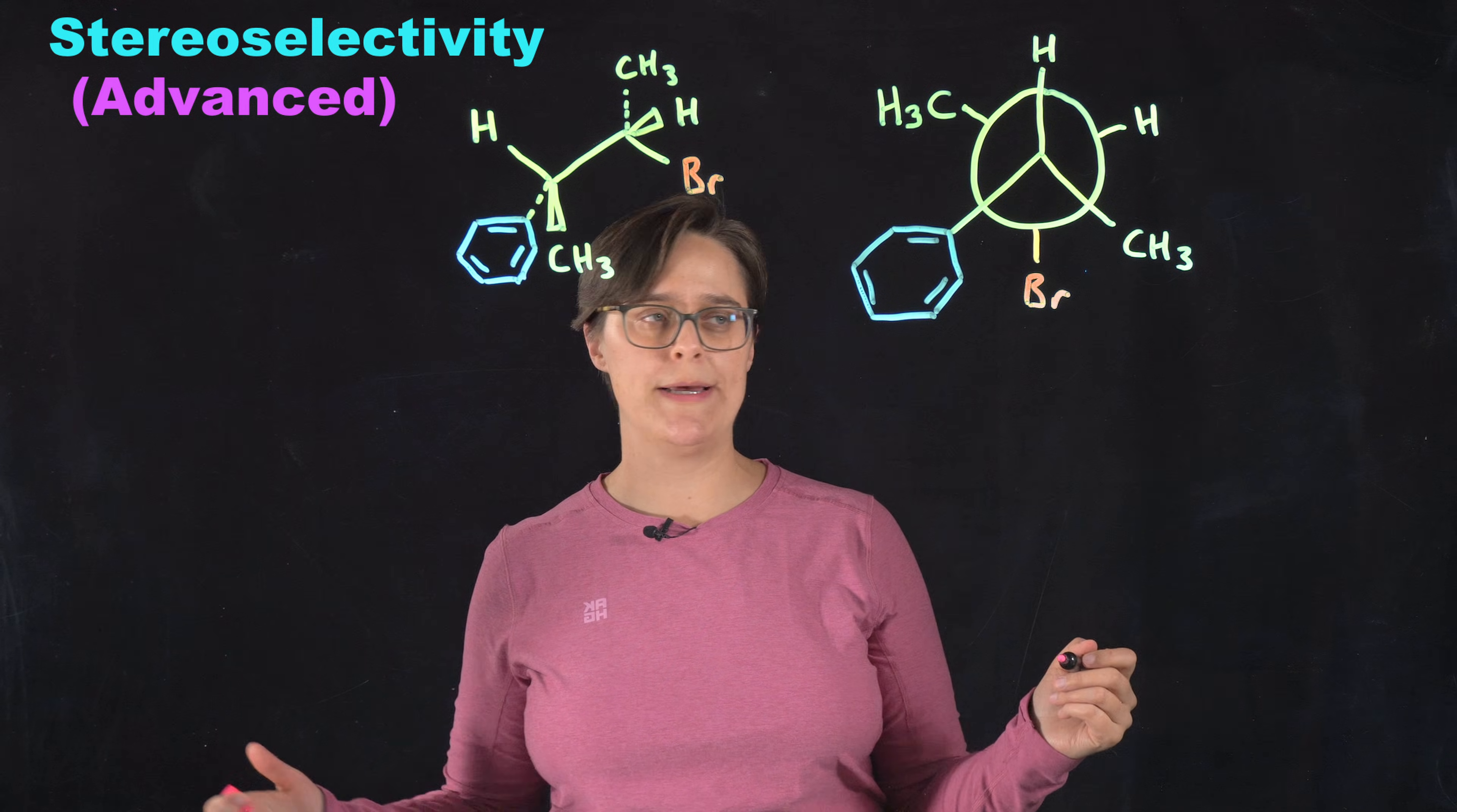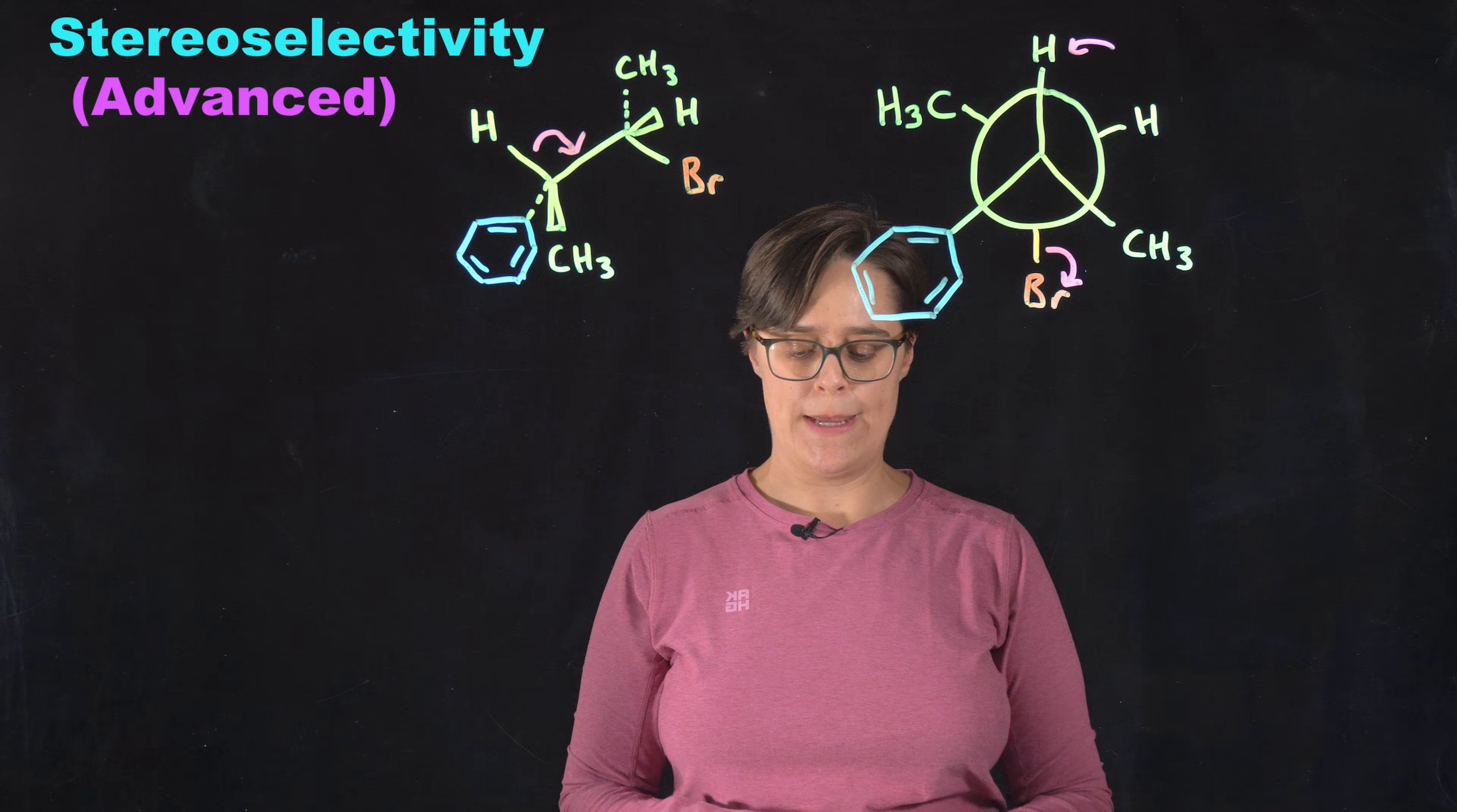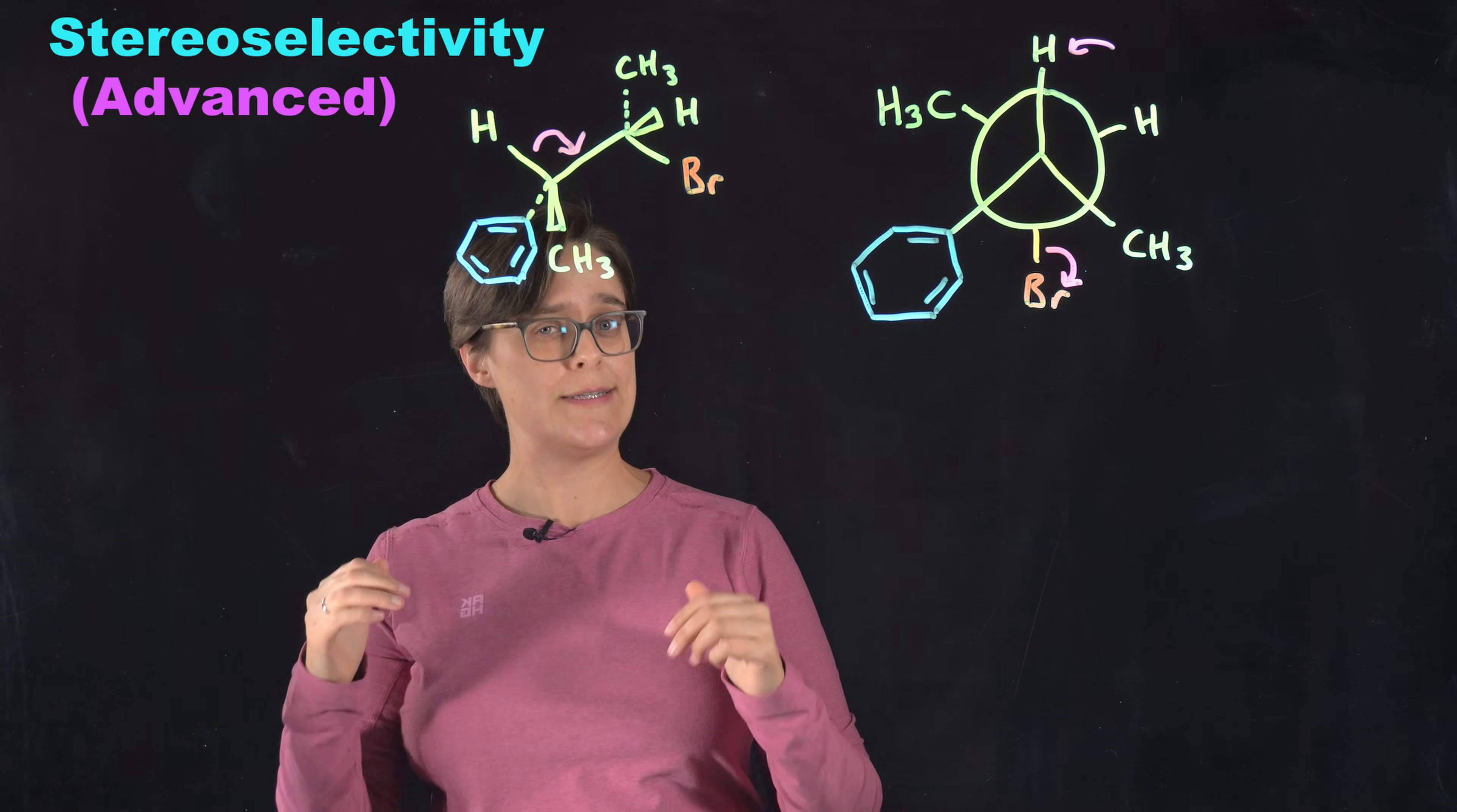So when this mechanism occurs, this bromine is going to leave. Something is going to come and take this hydrogen. Those electrons are going to jump to this carbon-carbon double bond. When that happens, double bond is going to form here. This is just going to snap into whatever conformation is the closest. When this is an alkene, when this is a double bond, these two carbons are going to be trigonal planar. So we'll have a big section of this molecule that is a flat plane.